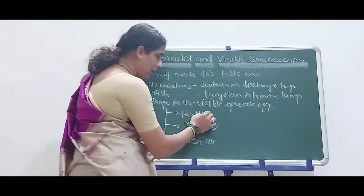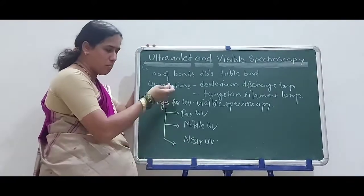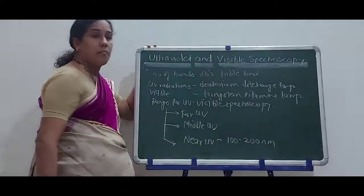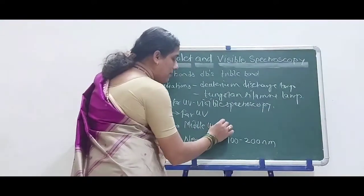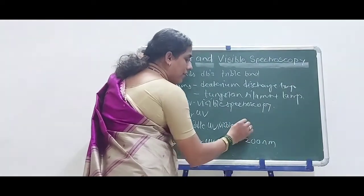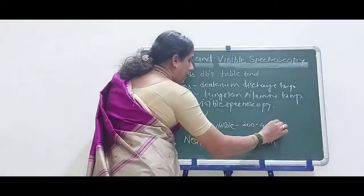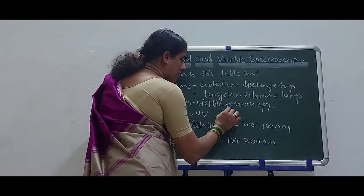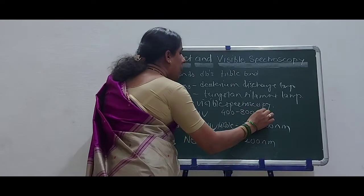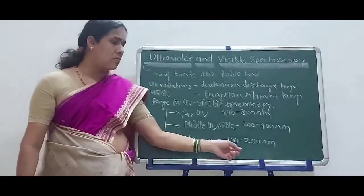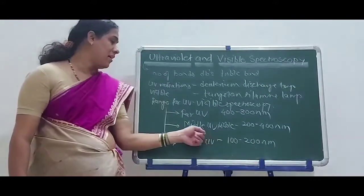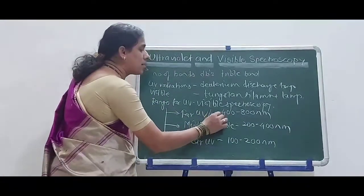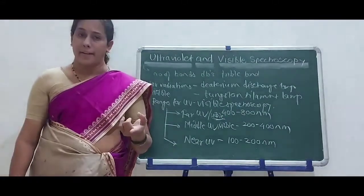The near UV range is 100 to 200 nanometers. The middle UV range is 200 to 400 nanometers. The far UV range — also called the visible region — is 400 to 800 nanometers.